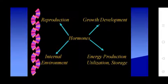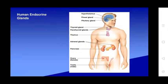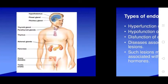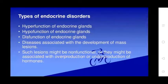Hormones regulate reproduction, growth, development, internal movement, energy production, and integration of human hormones. The endocrine glands include the hypothalamus, pineal gland, pituitary glands, thyroid gland, parathyroid glands, thymus, adrenal glands, pancreas, ovary, and testes. Each has its own distinct role within the body.